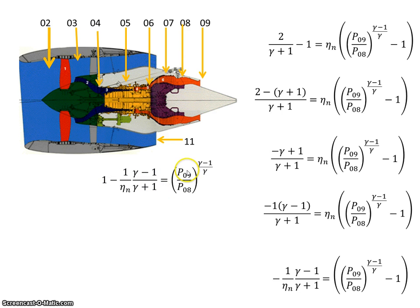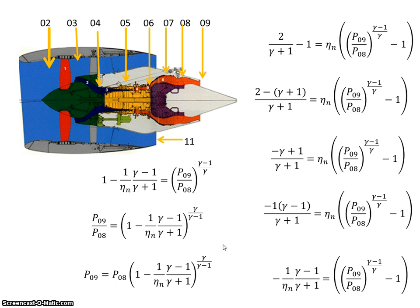So if I want to get P9 over P8, I take the gamma over gamma minus 1 root of this expression. So P9 over P8 is that expression there, or P9 is equal to P8 times that expression.